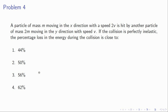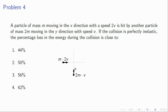Problem 4: a particle of mass m moving in the x direction with speed 2v is hit by another particle of mass 2m moving in the y direction with speed v. The collision is perfectly inelastic. Momentum in the x direction is 2mv and in y is also 2mv — they are the same. After the collision the masses join, total mass 3m, moving symmetrically at 45 degrees. Choosing velocity v times 2√2 over 3, momentum in x will be 2mv and similarly in y will also be 2mv.